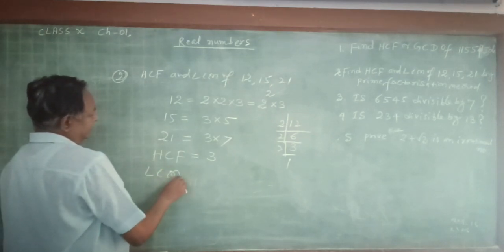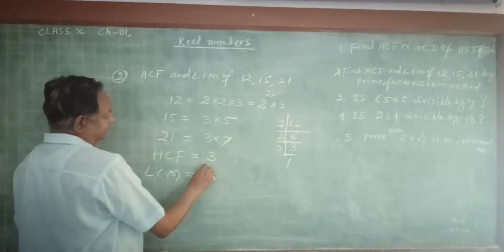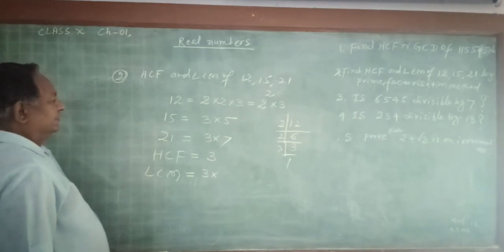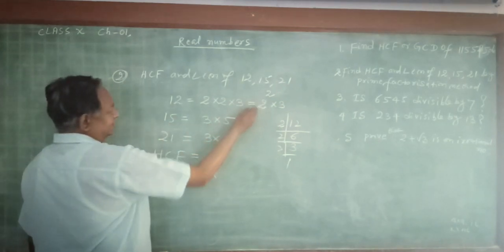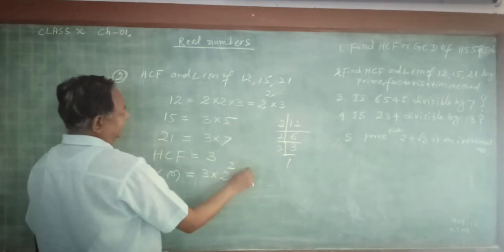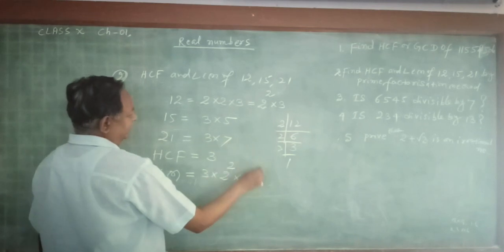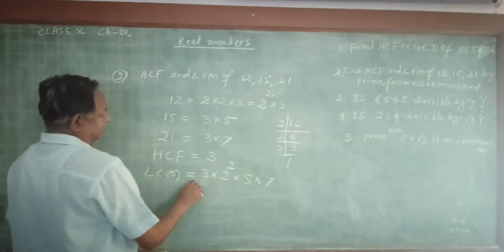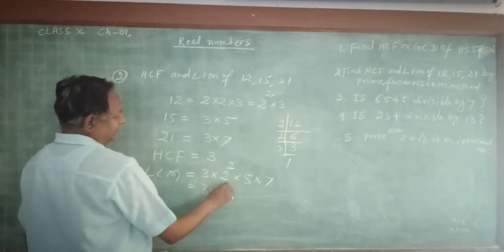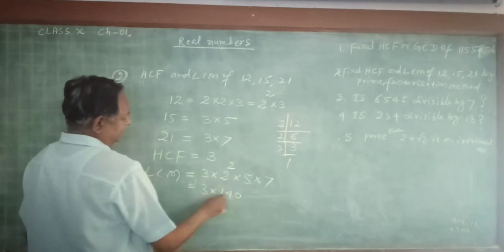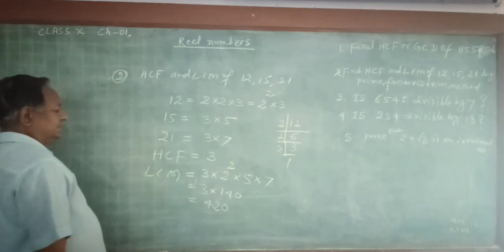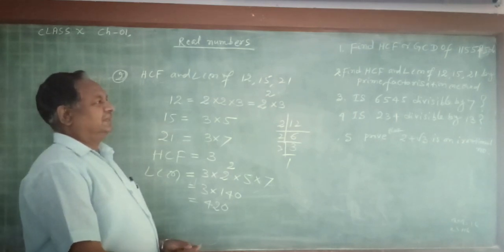Now for LCM: first write the HCF, then multiply by all the remaining factors. That is 3 into 2 squared into 5 into 7. This equals 3 × 4 × 5 × 7, which equals 420. That is the required LCM.